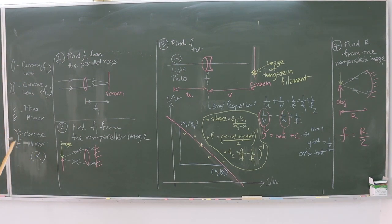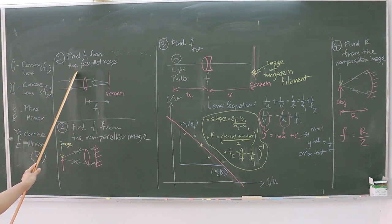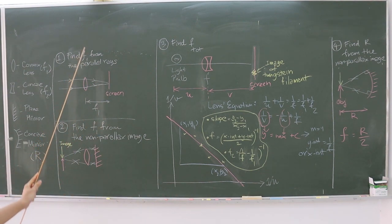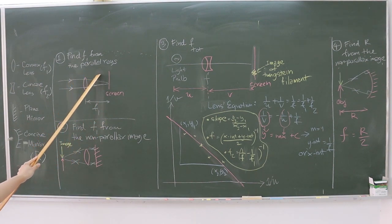Its light-converging characteristic can be described by its radius of curvature R. This experiment consists of four parts. Starting with part 1, the objective is to determine the focal length F1 from the parallel rays, which are the light rays from a distant object. In theory, when parallel rays are incident upon the convex lens, the image will form at the focal point of the lens.